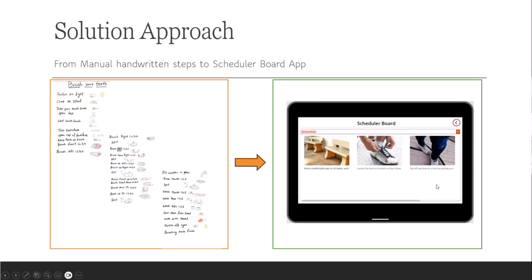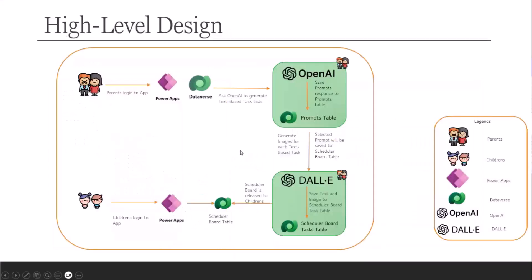We are moving from that to a scheduler board that has all the steps to perform each activity. With the help of Azure AI and the Canvas app, parents can build the app according to their requirements. This is the high-level design, using Power Apps, Dataverse for storing data, Azure OpenAI, and DALL-E services to generate text scripts and images.